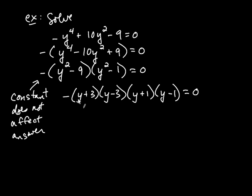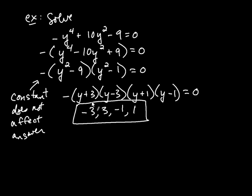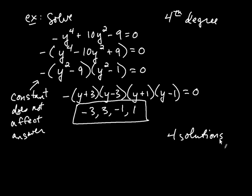We can ignore the constant. When y plus 3 equals zero, we get y equals negative 3. When y minus 3 equals zero, we get y equals positive 3. The next factor gives y equals negative 1, and when y minus 1 equals zero, we get y equals positive 1. So in this case we have four solutions. Notice the polynomial equation was of degree 4, and we ended up with four solutions. It turns out that's not always the case, but you'll never get more solutions than the degree of your polynomial — that result is called the fundamental theorem of algebra.